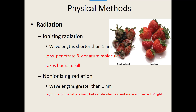Non-ionizing radiation has longer wavelengths that cannot penetrate into organisms but can be used to disinfect air and surface objects. One of the most common types is UV light. When you walk into Walmart, next to the carts there's a UV light on the wall to kill microorganisms on the carts. They also have sanitary wipes because you don't know how long the cart has been exposed to the UV light, but it does help disinfect the air and cart surfaces.